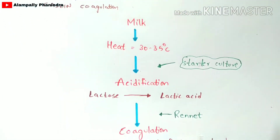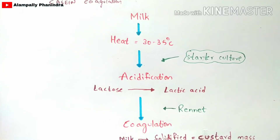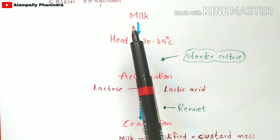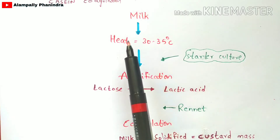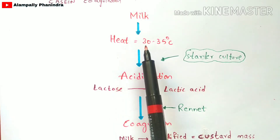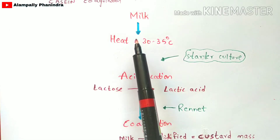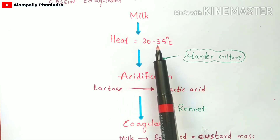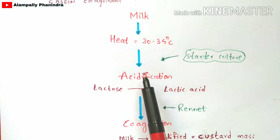Now let us discuss the steps involved in the production of cheese. In the first step, you take the milk and stabilize it for one day, and then you heat that milk to 30 to 35 degrees Celsius. After that heating, the heated milk undergoes acidification.